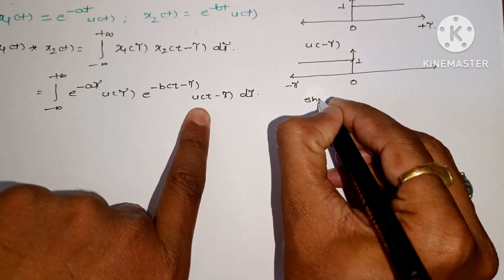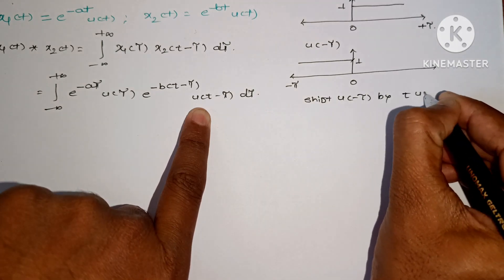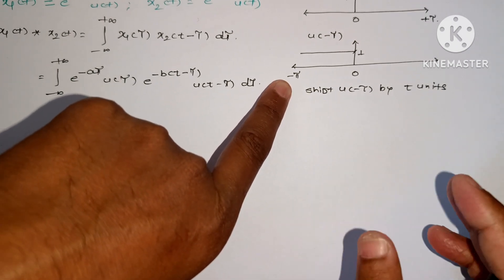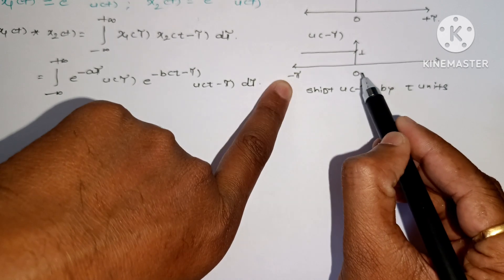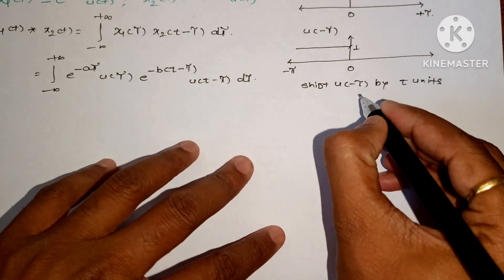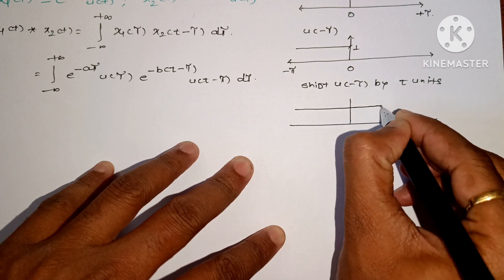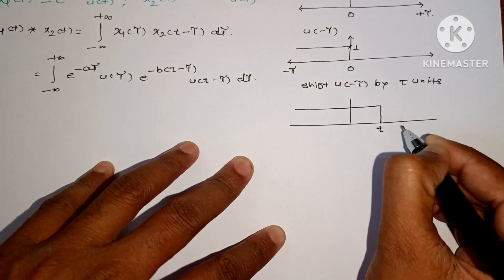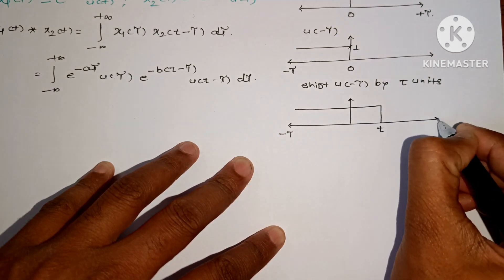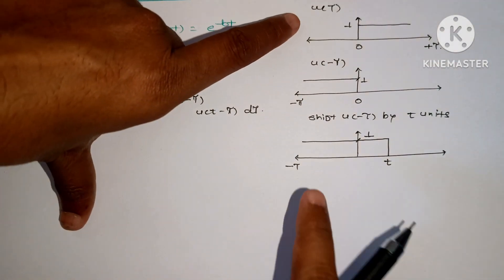Now we have to shift this folded signal u(minus τ) by t units. We add t to the argument, changing it from u(minus τ) to u(t minus τ). The zero crossing, originally at 0, shifts to t. So the signal now spans from minus infinity to t.